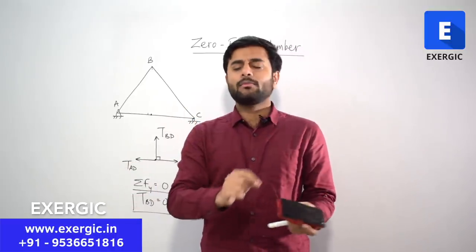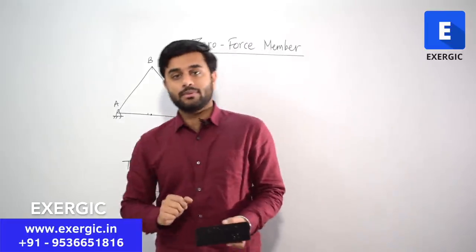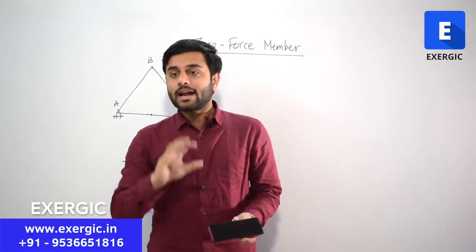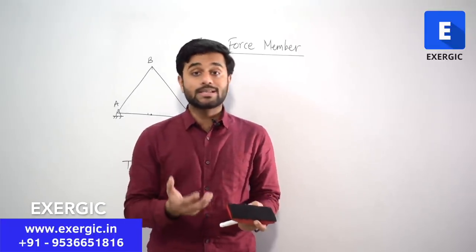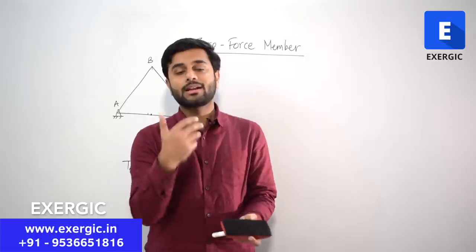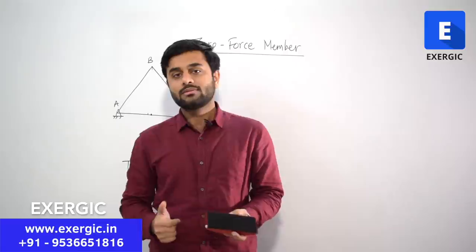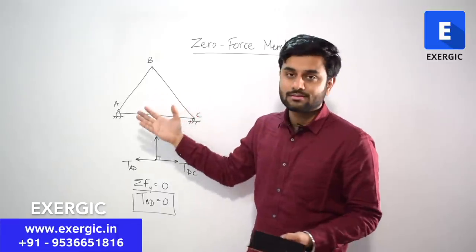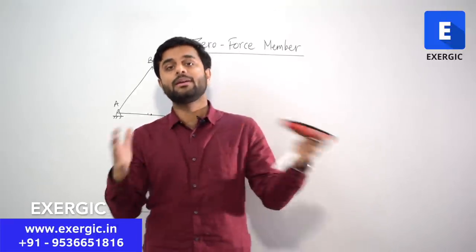Whenever you have a problem on a truss, your first objective should be to eliminate the zero force members. If you are not directly able to reach the unknown force, try to look for zero force members. Generally there are not many, but if the question is complex, there will definitely be some. GATE or any exam can directly ask you to identify the zero force members. Doing this has greatly simplified the truss — it's just a simple triangle now.